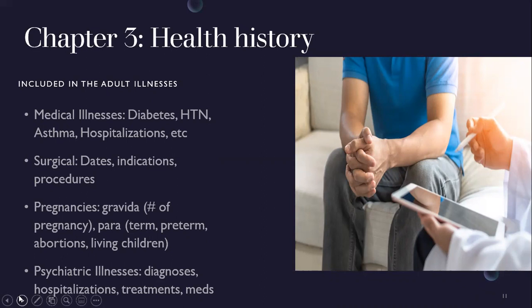In the adult health history, get their medical illnesses — diabetes, hypertension, asthma, hospitalizations — and surgical history. Make sure you get dates, because a bowel resection six months ago is relevant if they're now presenting with vomiting. For pregnancies, document the number and the GTPAL — gravida, term, preterm, abortions, living children. Psychiatric illnesses including diagnoses, hospitalizations, treatments, and medications.